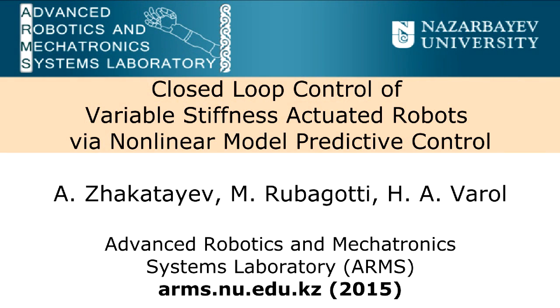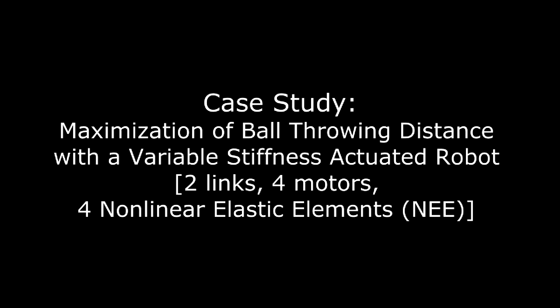In this work, we present a closed-loop control framework for compliantly actuated robots based on nonlinear model predictive control. We demonstrate the efficacy of our approach experimentally in a ball-throwing task using a two-link variable stiffness actuated robot.